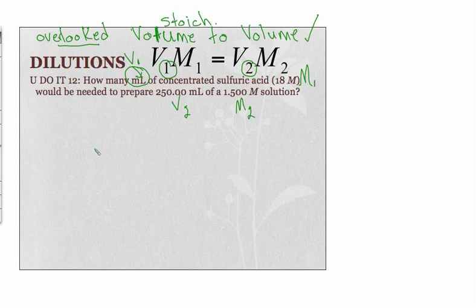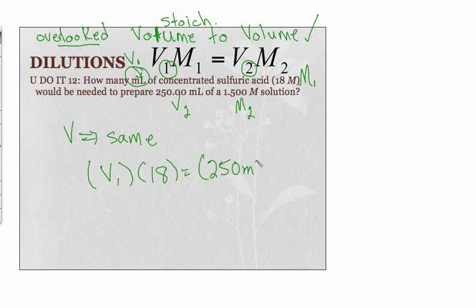Much like Boyle's Law, the units of volume don't have to be changed as long as the units of volume are the same, because anything you do to convert one would cancel the conversion for the other. Plug in: volume one times 18 is 250 milliliters times 1.500 molar. And I get a volume one equal to 20.83 milliliters.